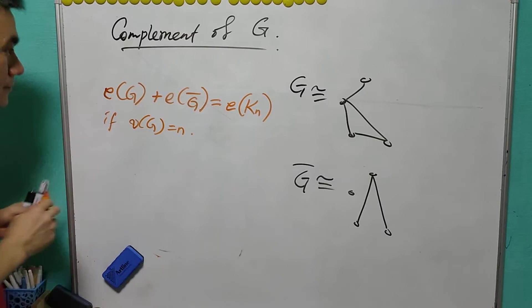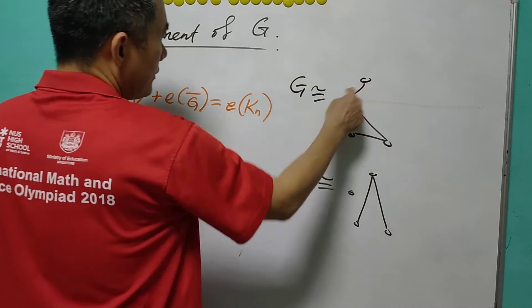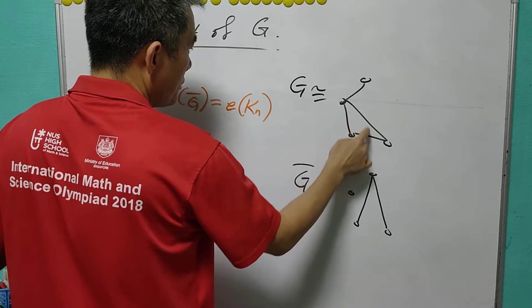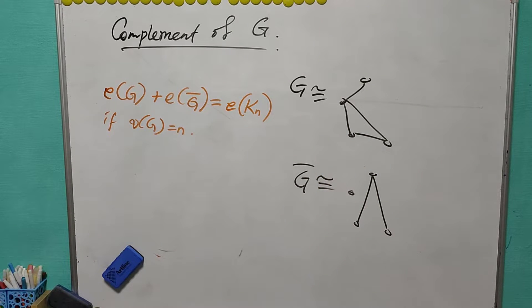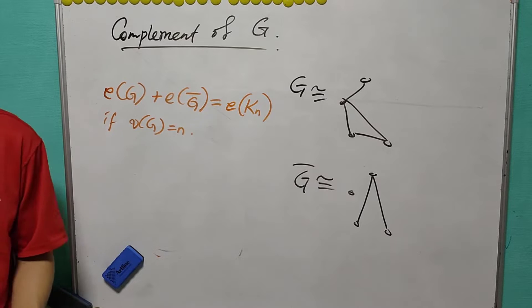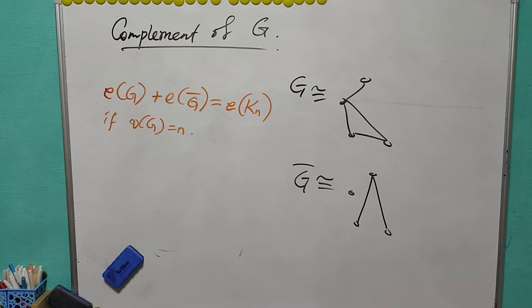In this case, N equals to 4, the size of G is 4, the size of G bar equals to 2, so the sum equals to 6.